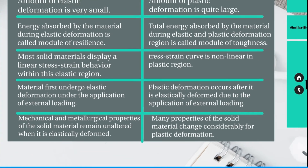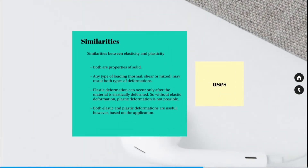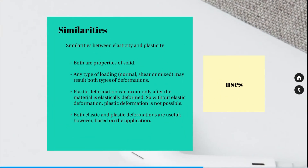Next, similarities between elasticity and plasticity. Both are properties of solids. Any type of loading — normal, shear, or mixed — may result in elastic or plastic deformation. Also, plastic deformation can occur only after the material is elastically deformed. So without elastic deformation, plastic deformation is not possible.